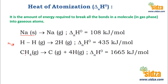Similarly, for CH₄ we know there are four bonds — four carbon-hydrogen covalent bonds. If you want to convert it into the gaseous atomic state — gaseous carbon and hydrogen in atomic states — 1665 kilojoules of heat is required to convert one mole of methane into gaseous atoms.